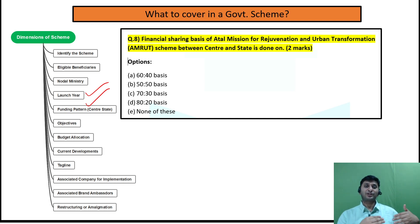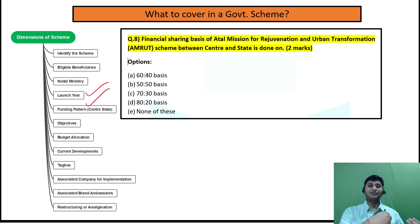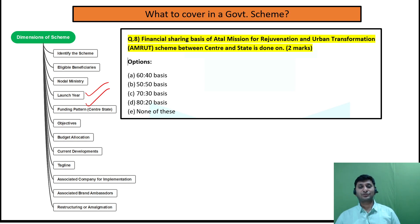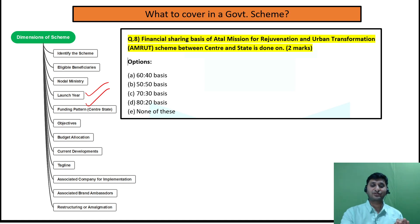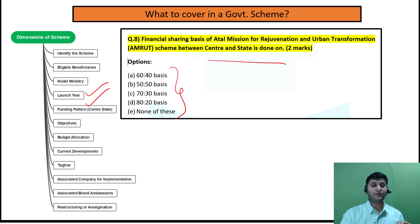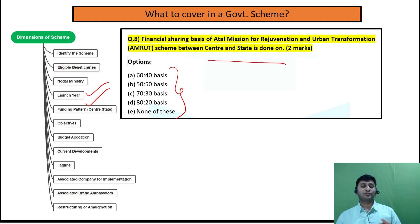Even more important than launch year is the funding pattern. Many schemes are launched by the centre and implemented by states, with the budget divided in certain proportions. For example, in the 2021 exam for AMRUT scheme, they asked: the financial funding between centre and state is done on what basis — 60:40, 50:50, 70:30, or 80:20? This is the kind of funding pattern you need to know.